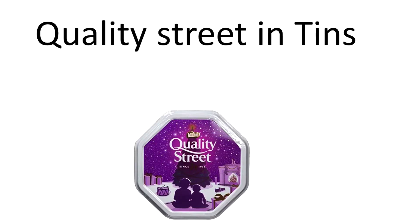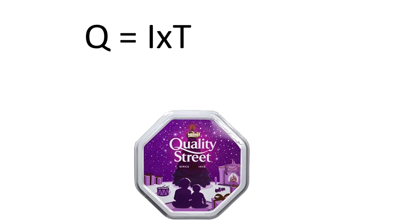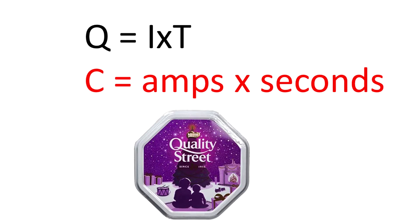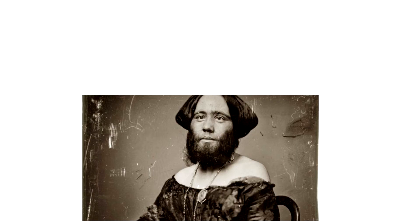What have I got here? I've got some chocolate — quality street in tins. Quality street in tins gives me Q equals I times T, and Q equals I times T tells me that charge equals current times time. The unit of charge is the Coulomb.